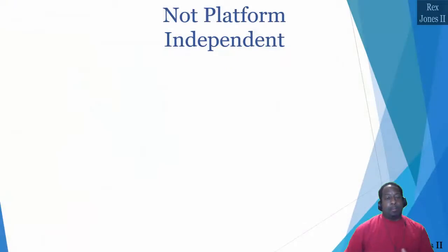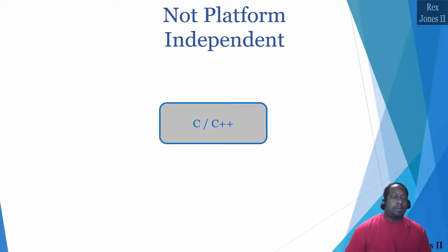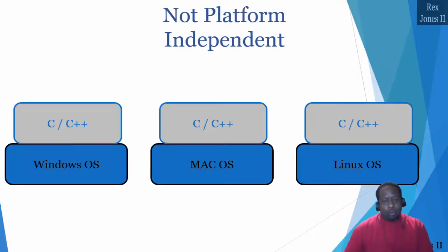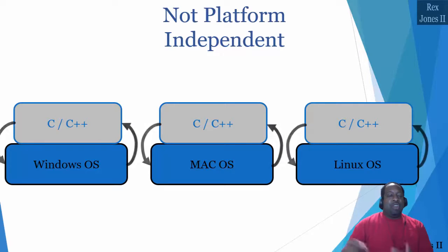Java is platform independent. However, C and C++ are not platform independent. They are written on top of a platform such as Windows, Mac, and Linux. To run the C and C++ code, first we compile the code, then use resources from the operating system.